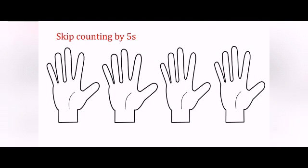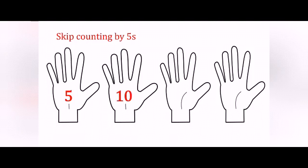Now let's see skip counting by 5s. Children, if I ask you to count the number of hands it will be very easy to count — there are 4 hands given in this picture. But if I ask you to count the number of fingers, it will take a little time. So let's count these fingers by making sets of 5 fingers. Start counting: 5, then 5 plus 5 is 10, 15, 20. So the total number of fingers is 20.